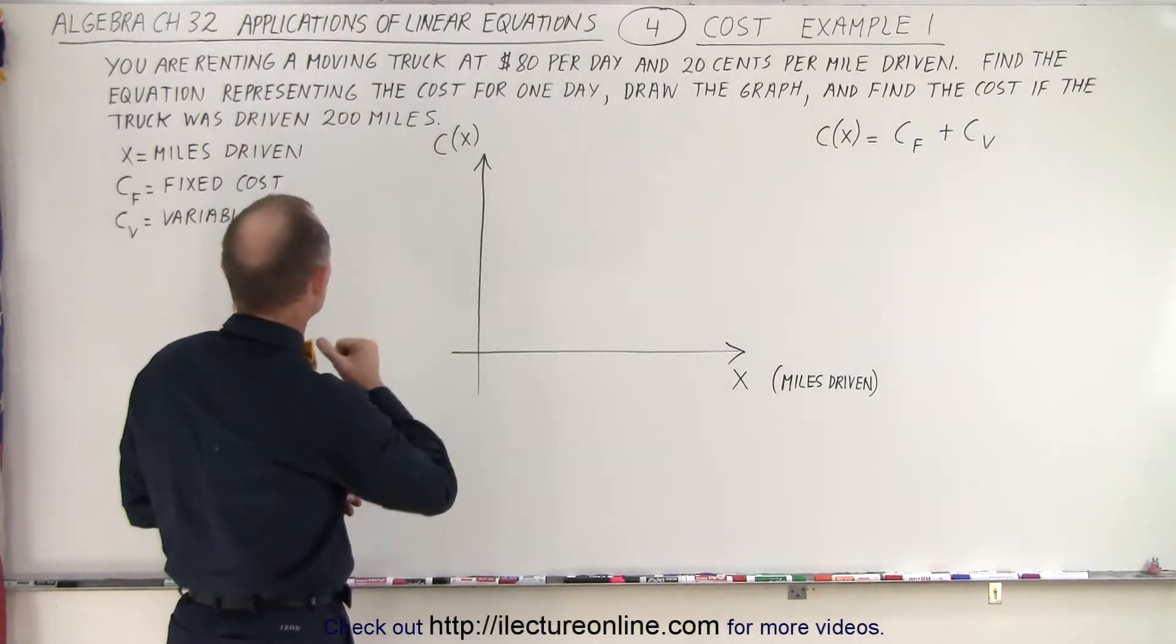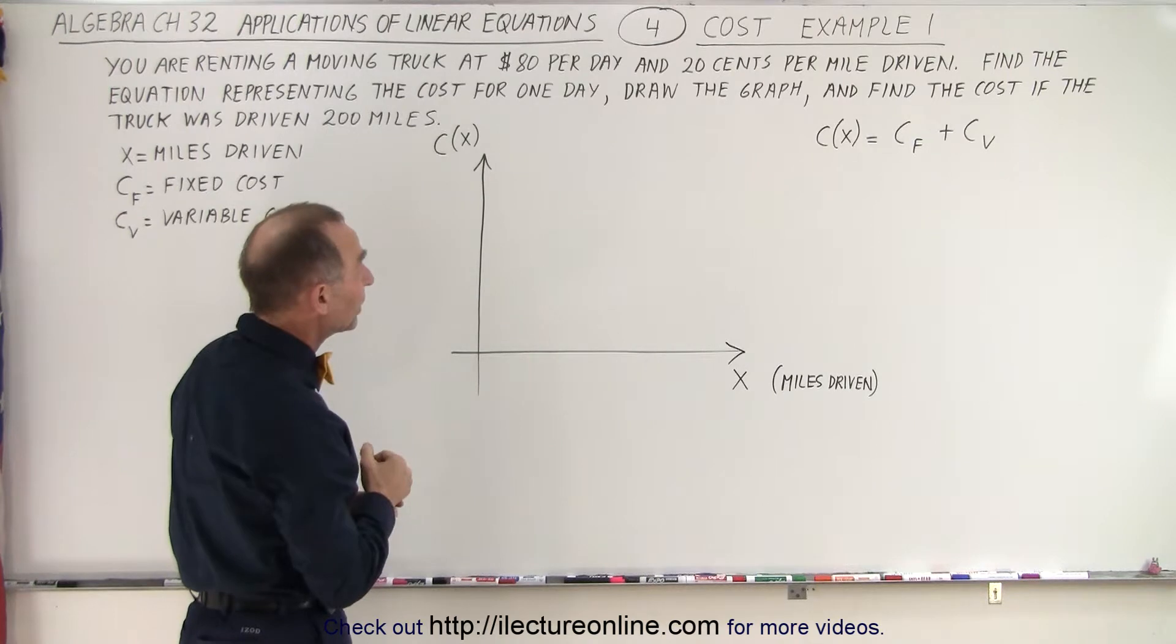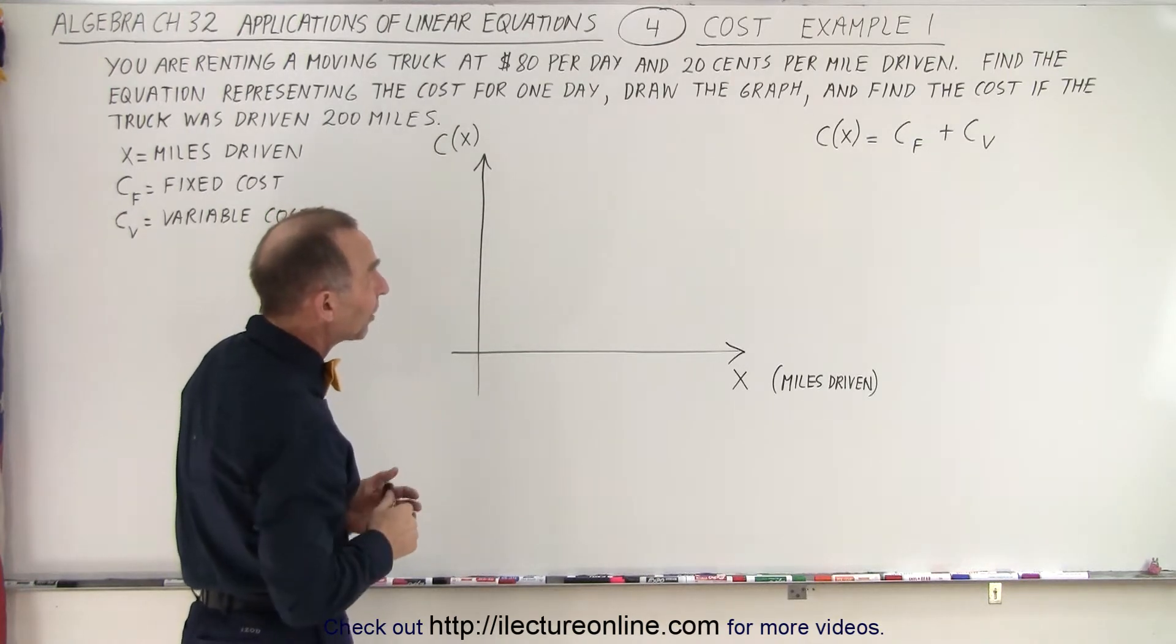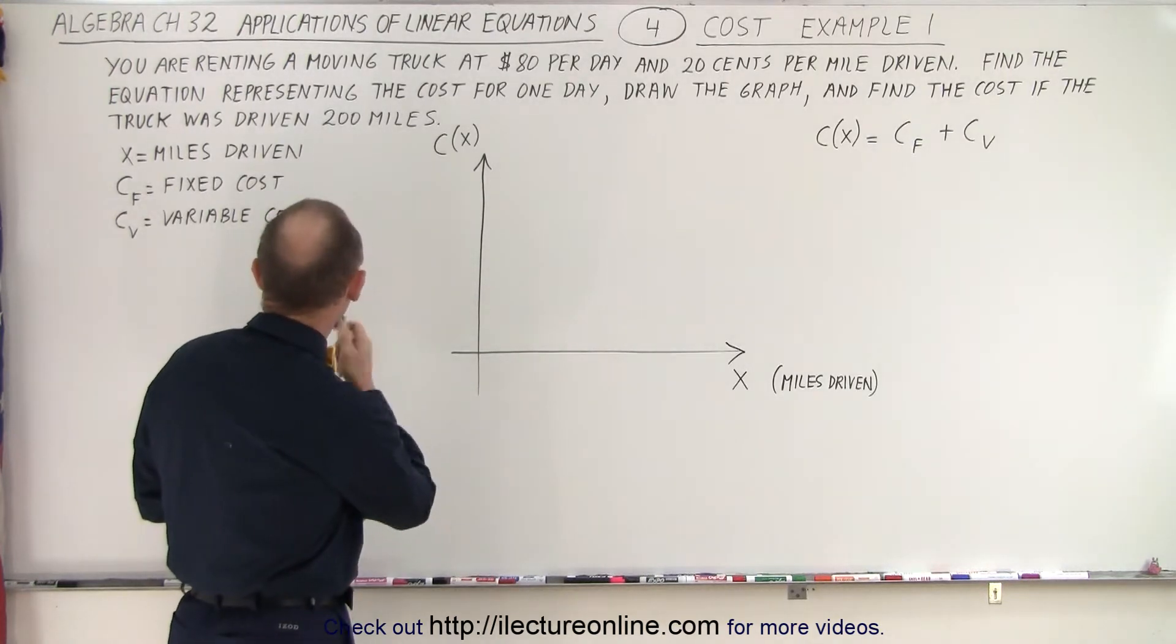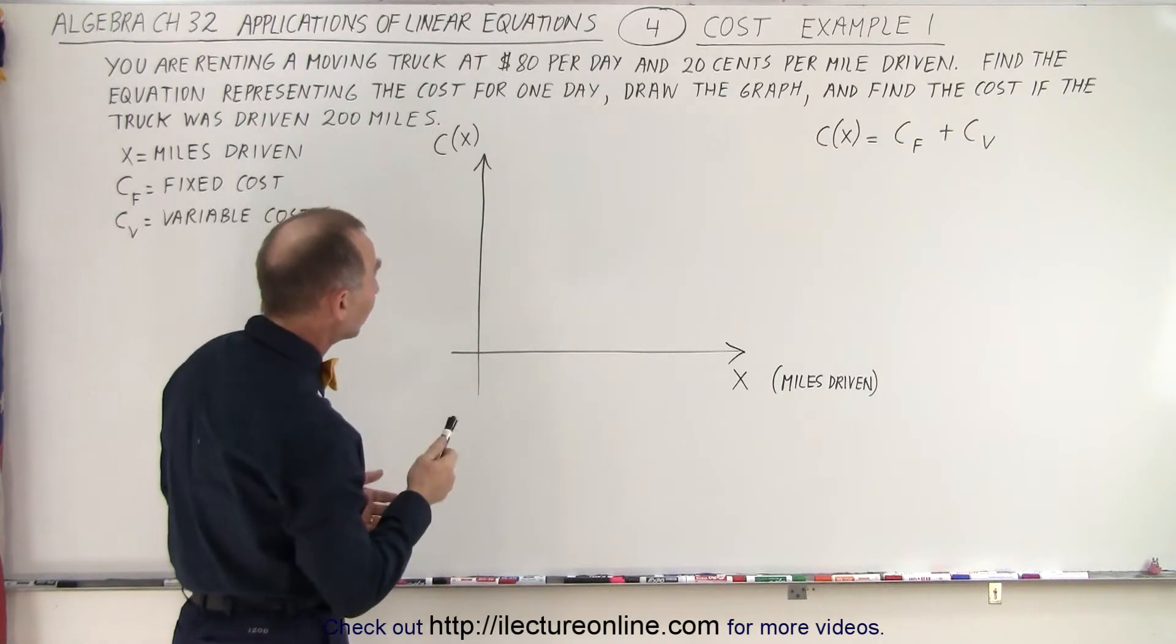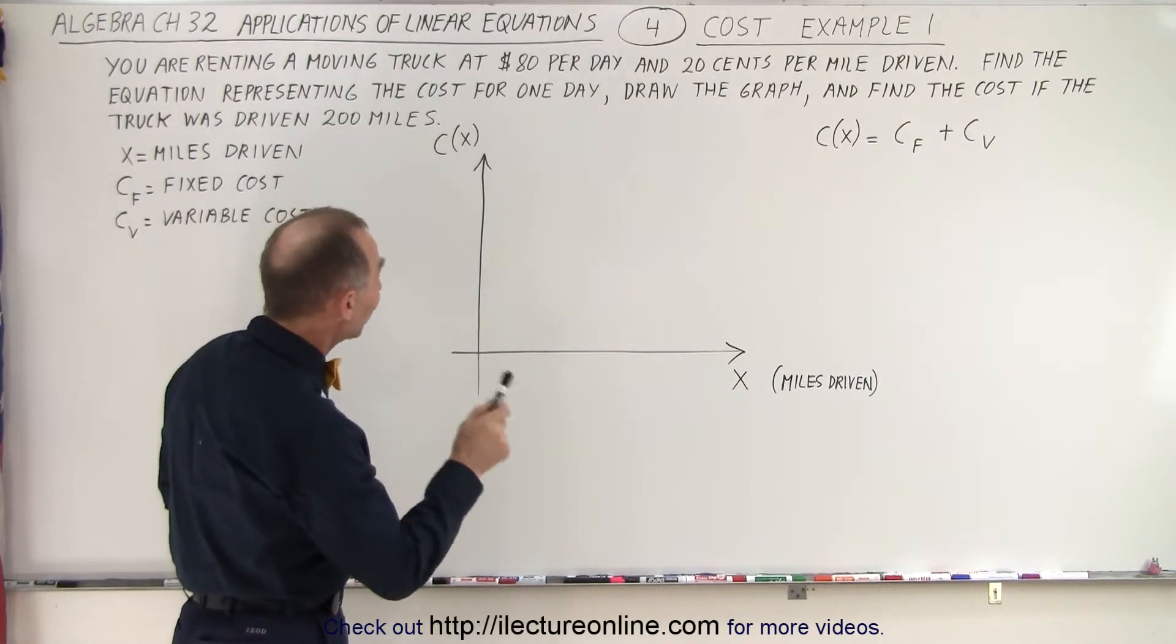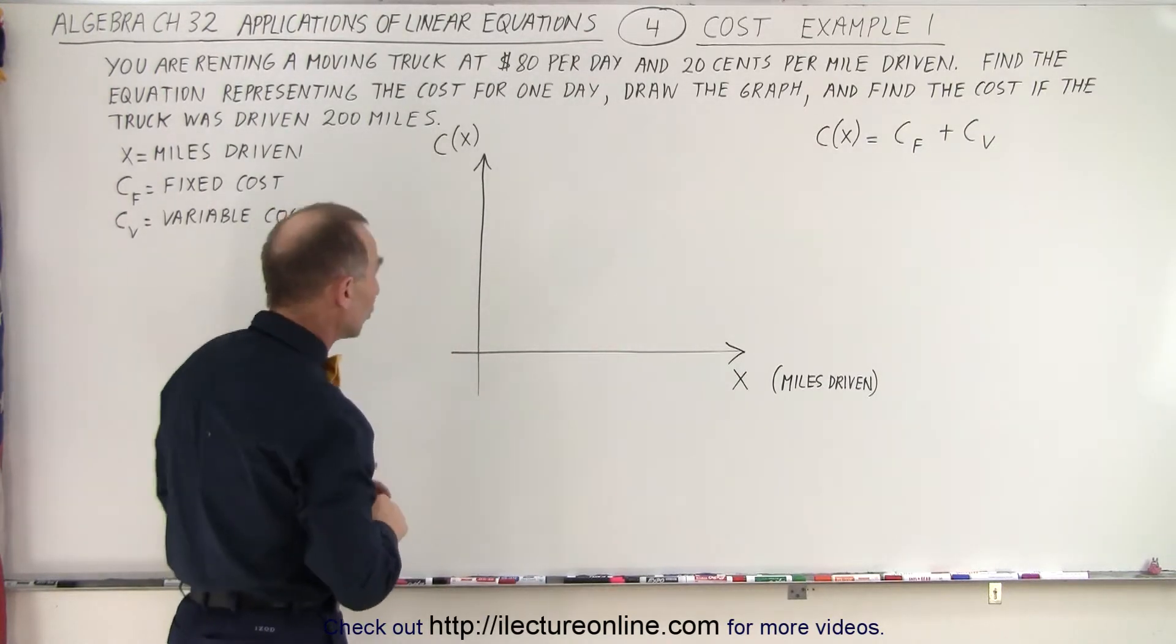In this case, we're renting a truck. You're renting a moving truck that costs $80 per day and $0.20 per mile driven. Find the equation representing the cost for one day, draw the graph, and find the cost if the truck was driven 200 miles.